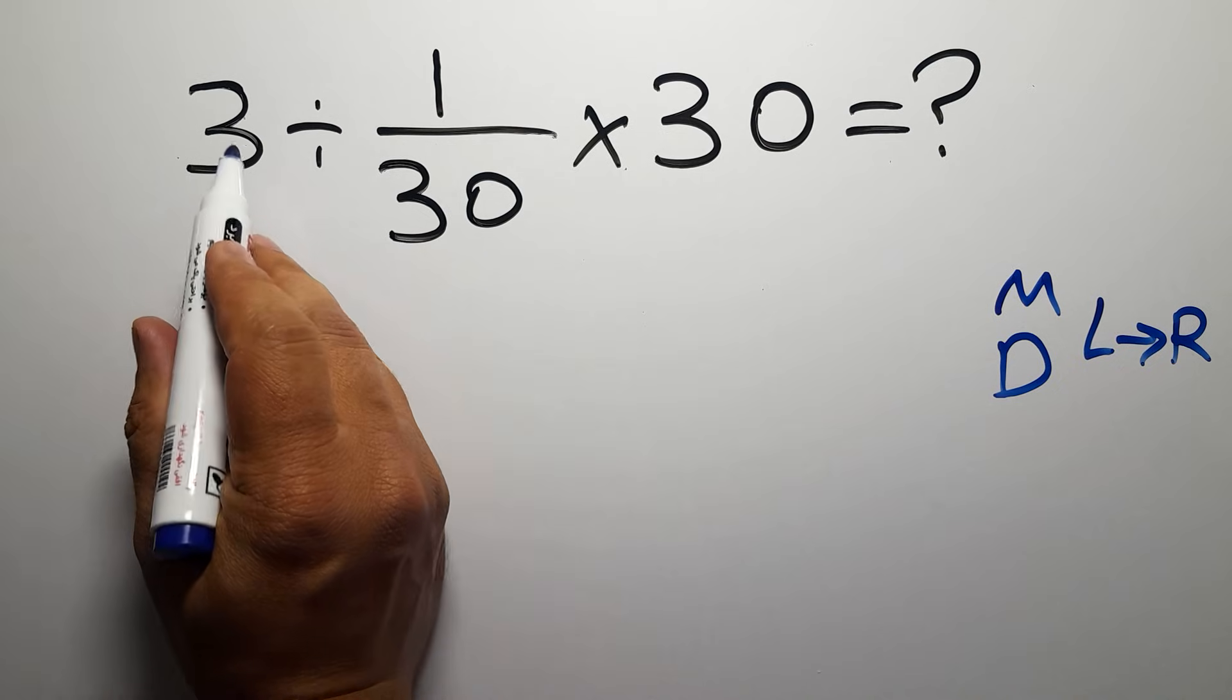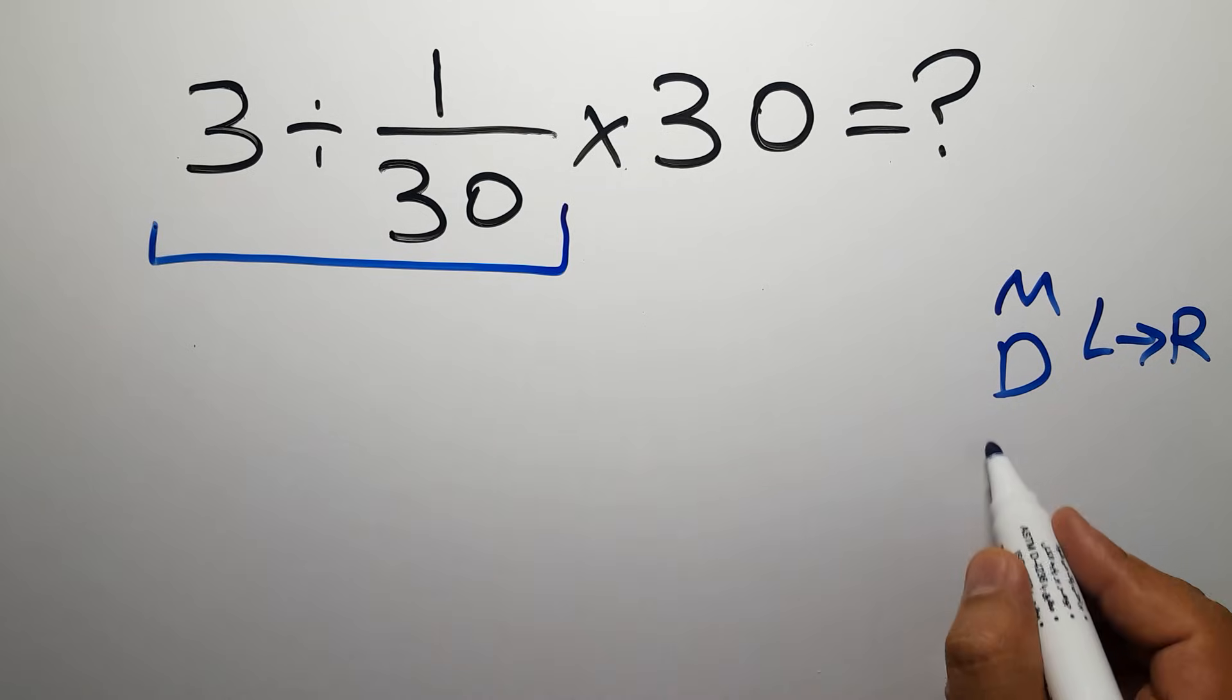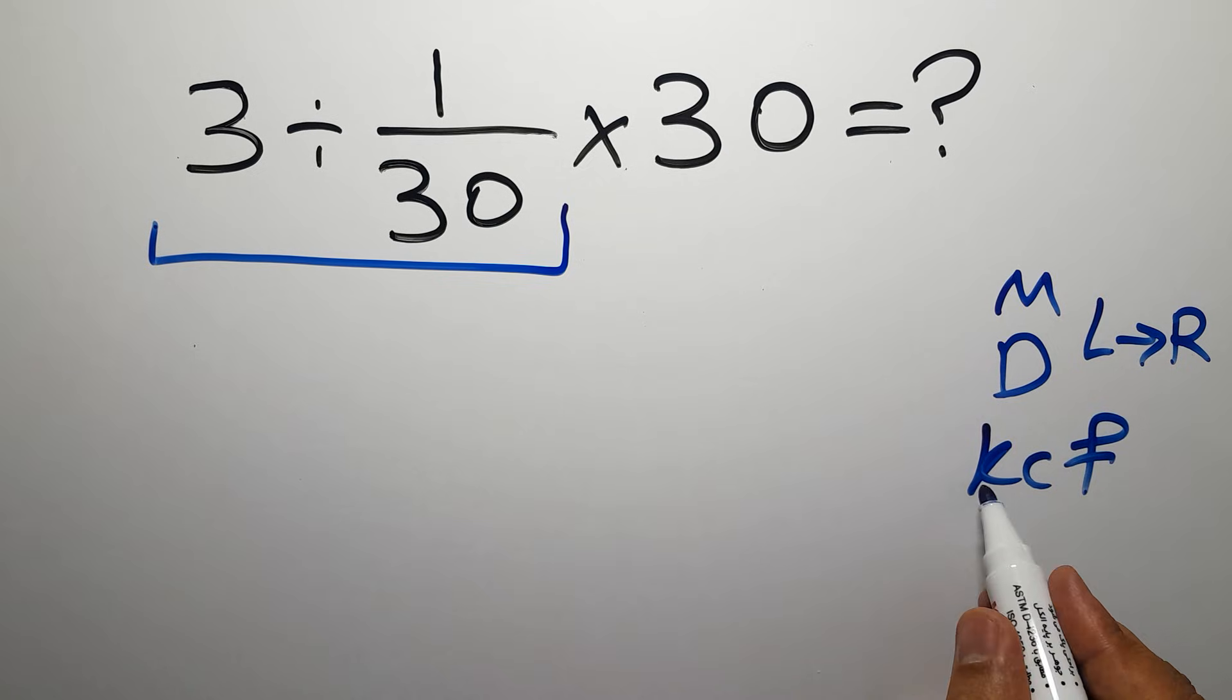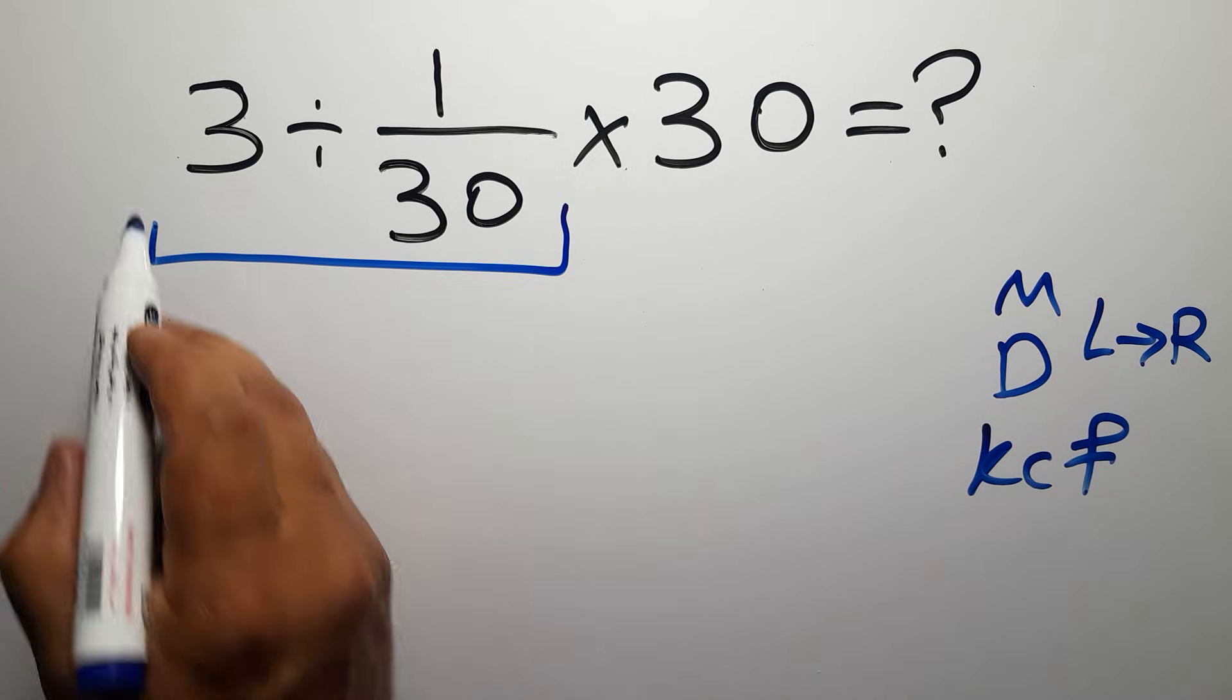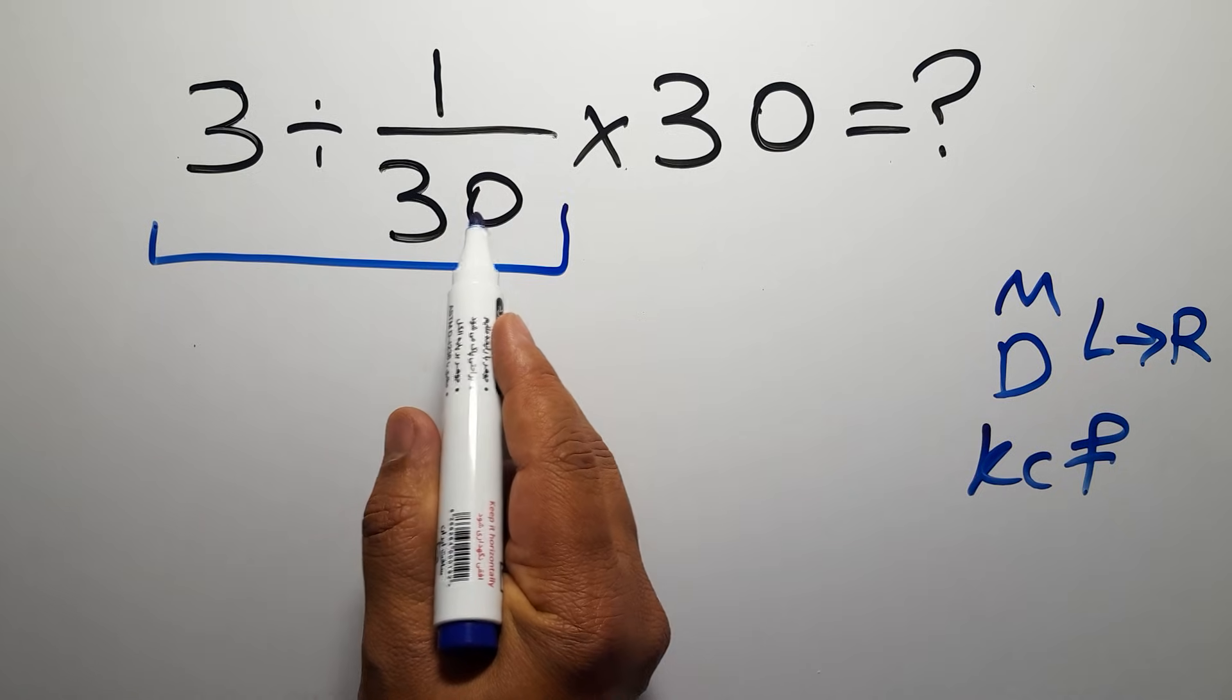Let's do it. First, 3 divided by 1 over 30. According to the KCF rule, K stands for keep, C stands for change, and F stands for flip. Keep the first fraction, change division to multiplication, and flip the second fraction.